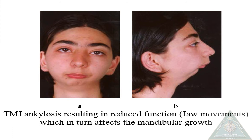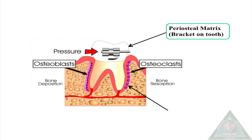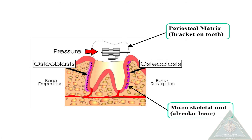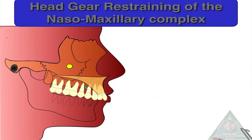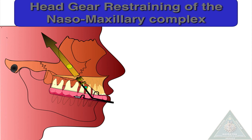A clinical example is TMJ ankylosis, where reduced jaw movement reduces growth of the mandible. In orthodontic treatment, brackets on the tooth surface act on the periosteal matrix, affecting the microskeletal unit — in this case the alveolar bone. A headgear restraining the maxilla is also an example of functional matrix theory, where the maxilla is the macroskeletal unit and the headgear acts as the capsular matrix.